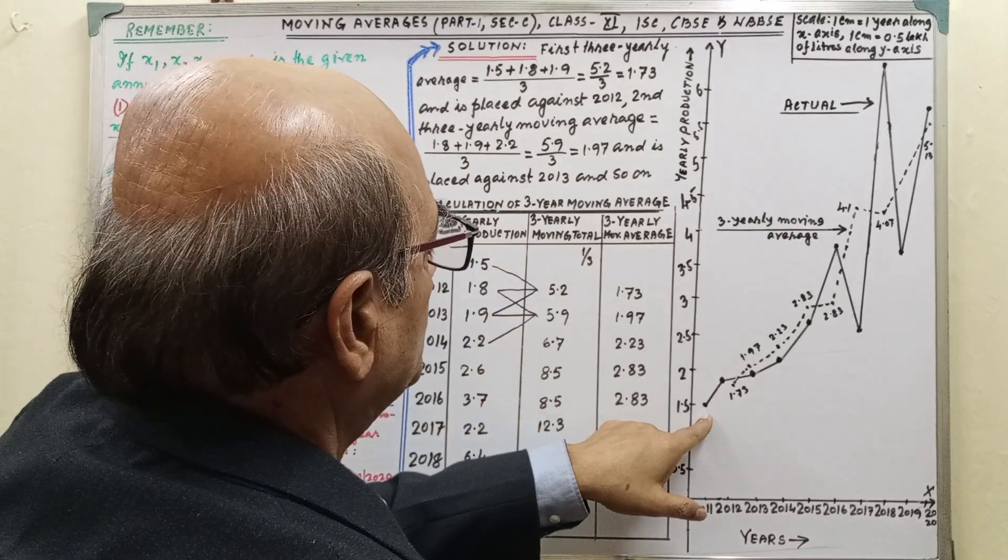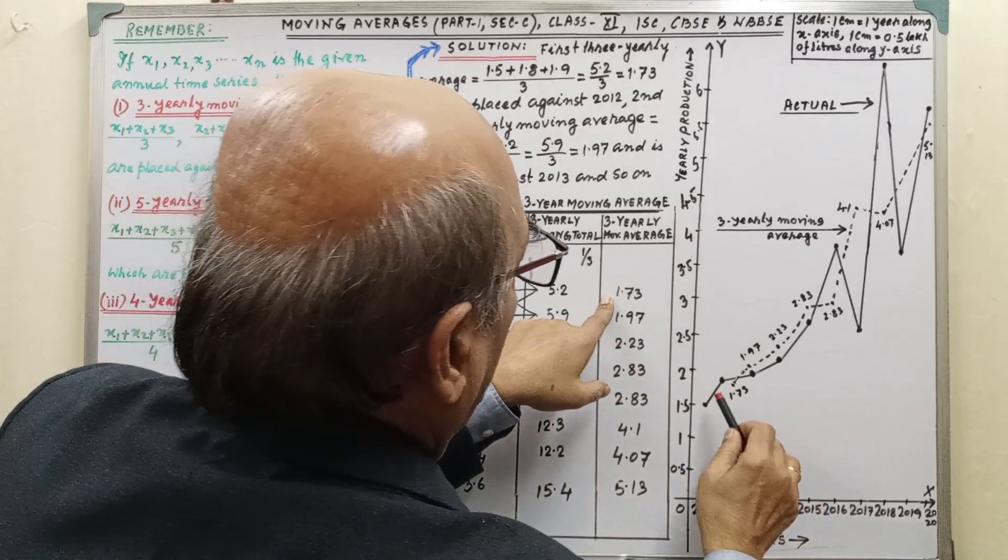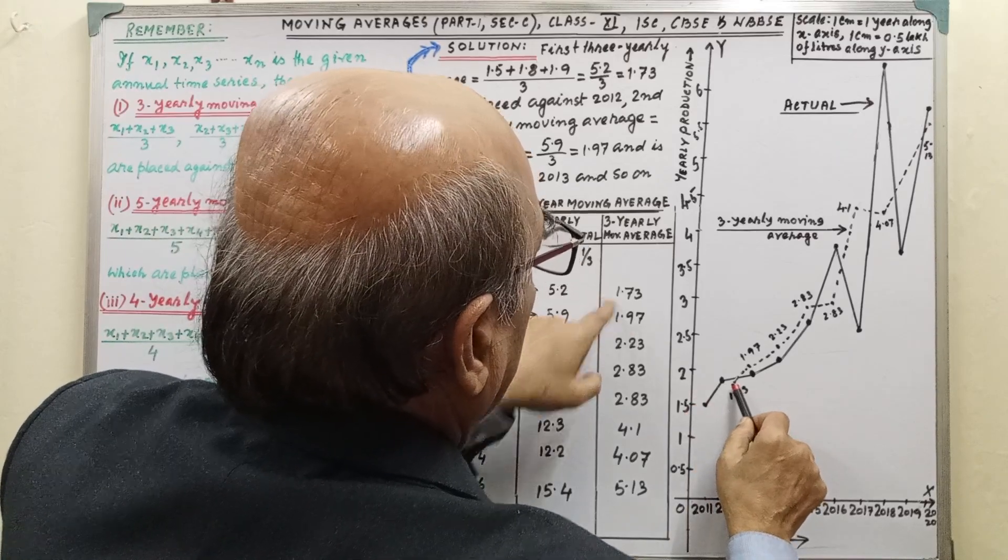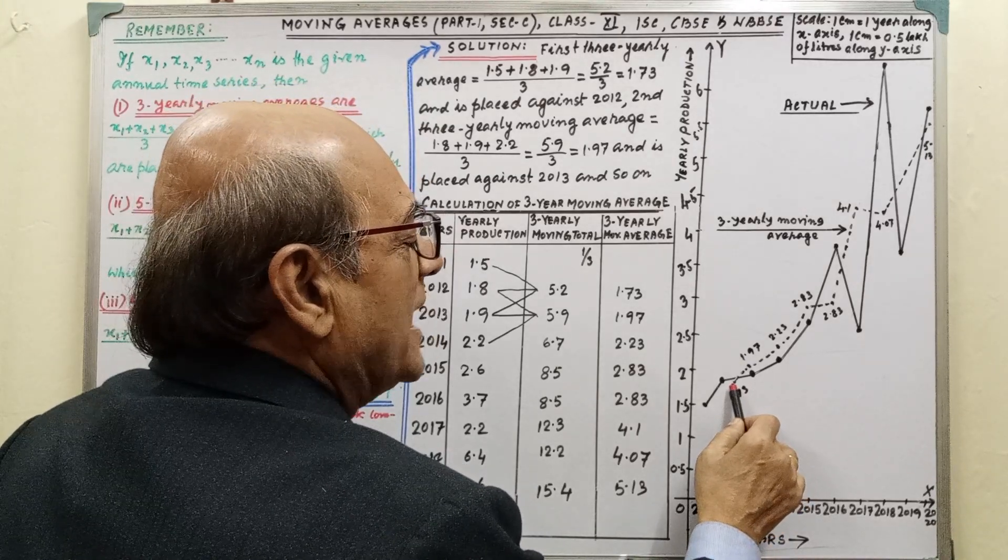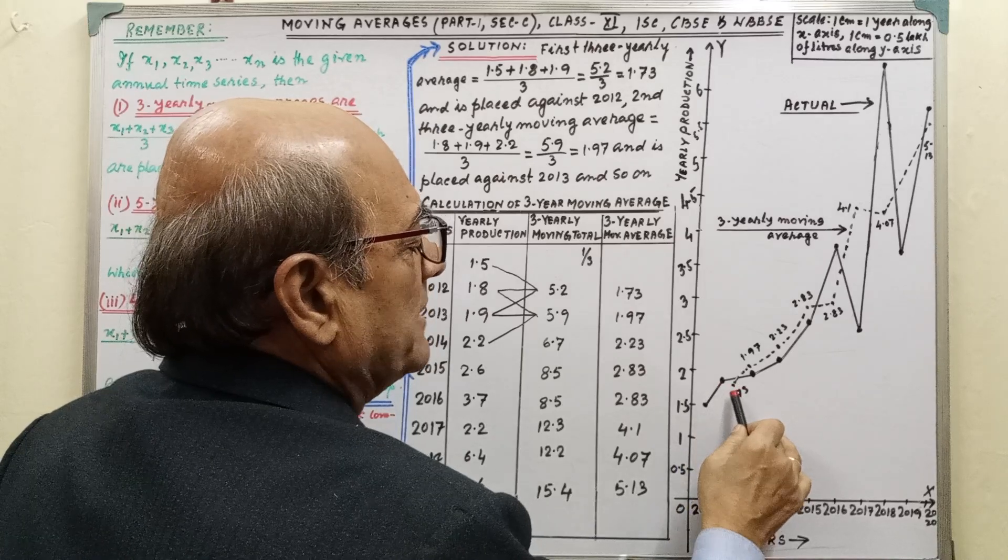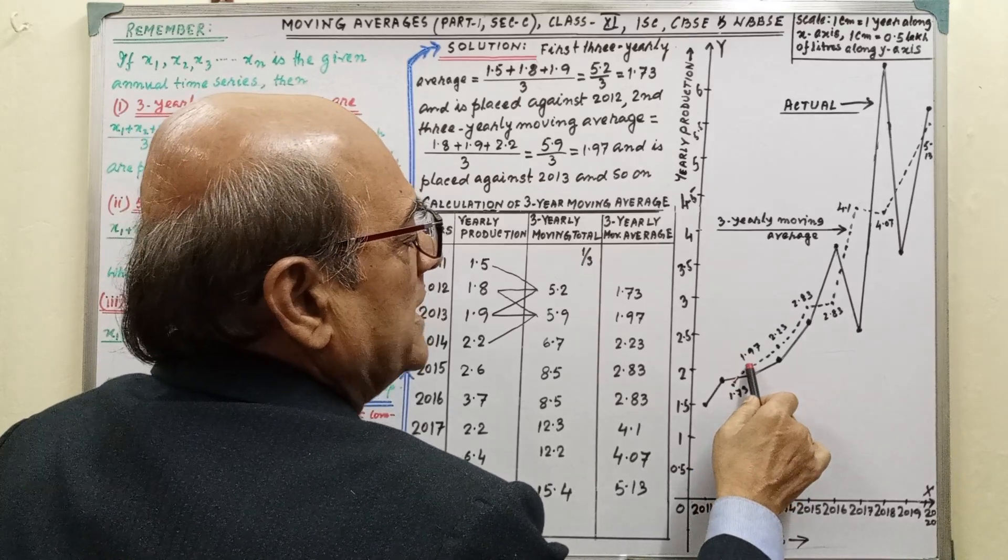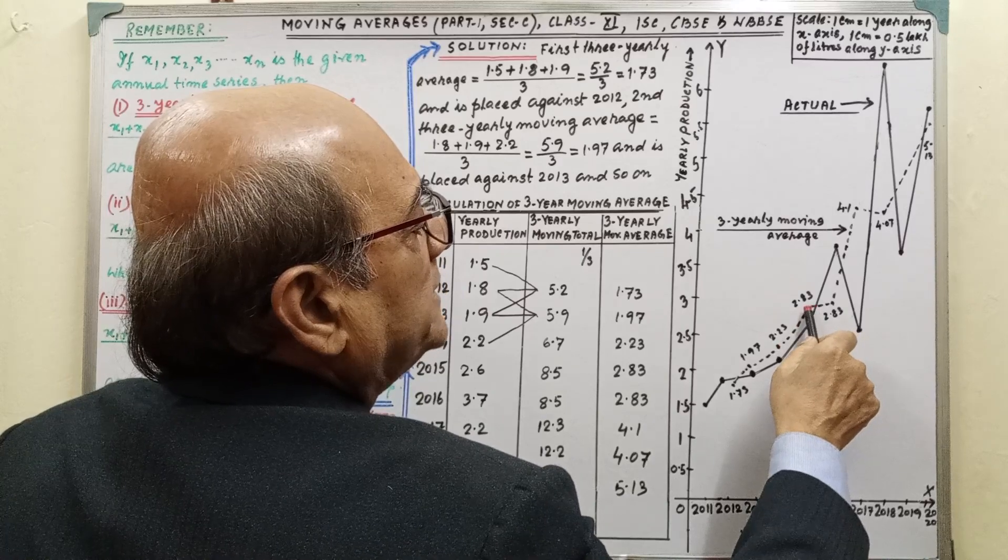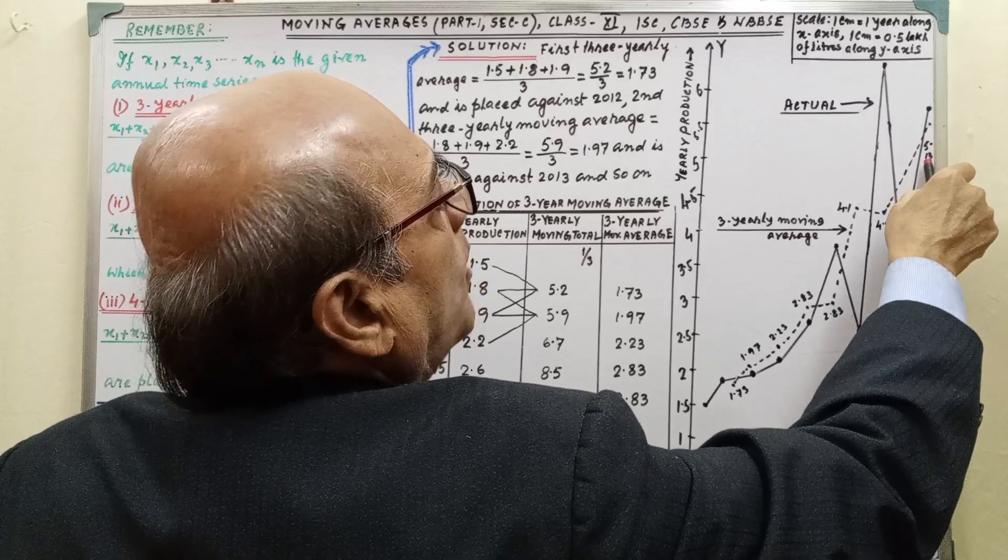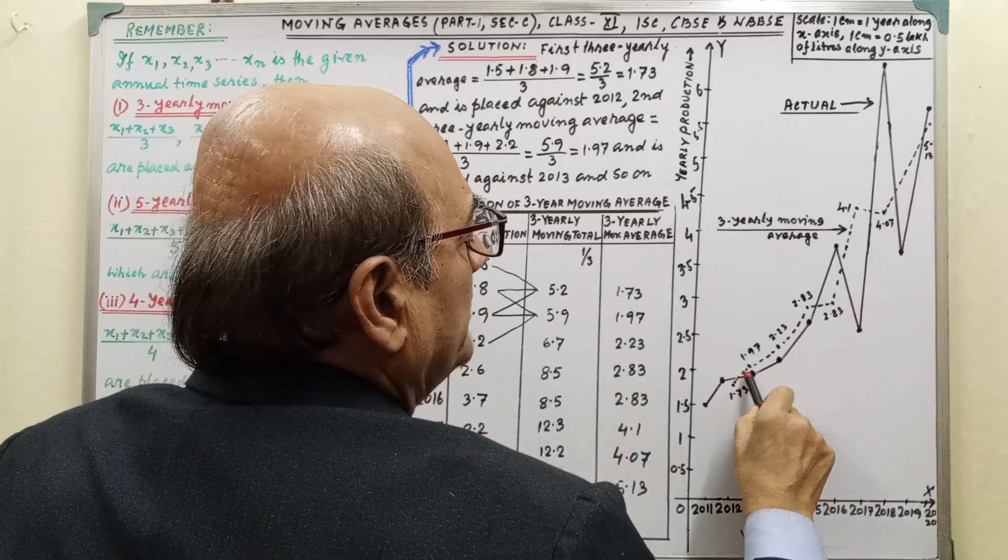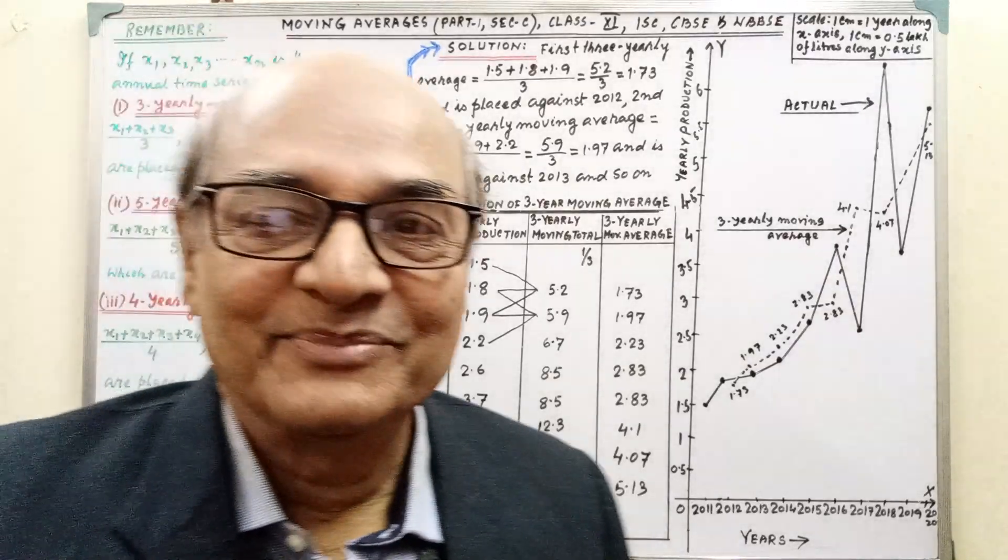Then, you have to plot the points. Dotted line is moving average. This is starting from 1.73, and actually it is starting from 1.5. 1.73, this is 1.5. You are doing in graph paper, but here it is plain paper, so you have to notice attentively. Approximately 1.73 is coming here, so it will be started from here. Then 1.97, 2.23, 2.83, 4.1, 4.07, and 5.13. After plotting, you have to join this by dotted line. Then the graph is completed.